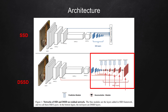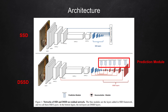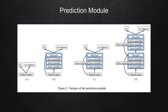To each extracted DSSD layer, a prediction module is applied to produce bounding box and class output of an object. The authors proposed four variants of the prediction module, shown in this slide. The most simple architecture is shown in the leftmost figure A. However, the authors state that adding a few layers of convolutions and a skip connection performs better. In the ablation study, the best score was achieved when using the C module, which is the third one.